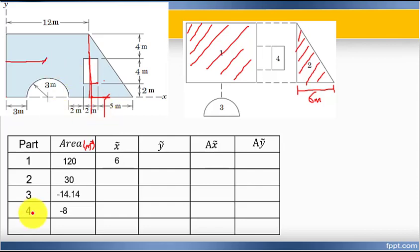Shape two is the triangle. How much distance from this origin to reach the center of this triangle? From this origin to this point is 12 meters. For a triangle, the centroid is at b over 3 from the edge.